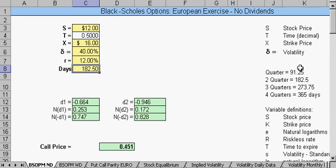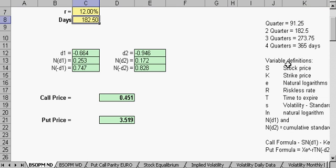Over here in the legend we have the quarters. One quarter equals 91.25 days and so forth.